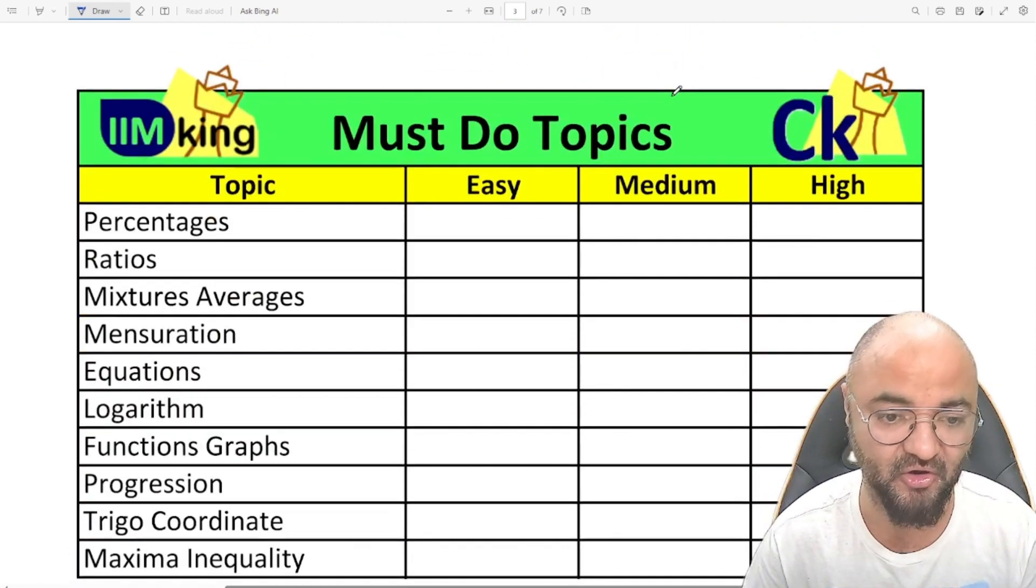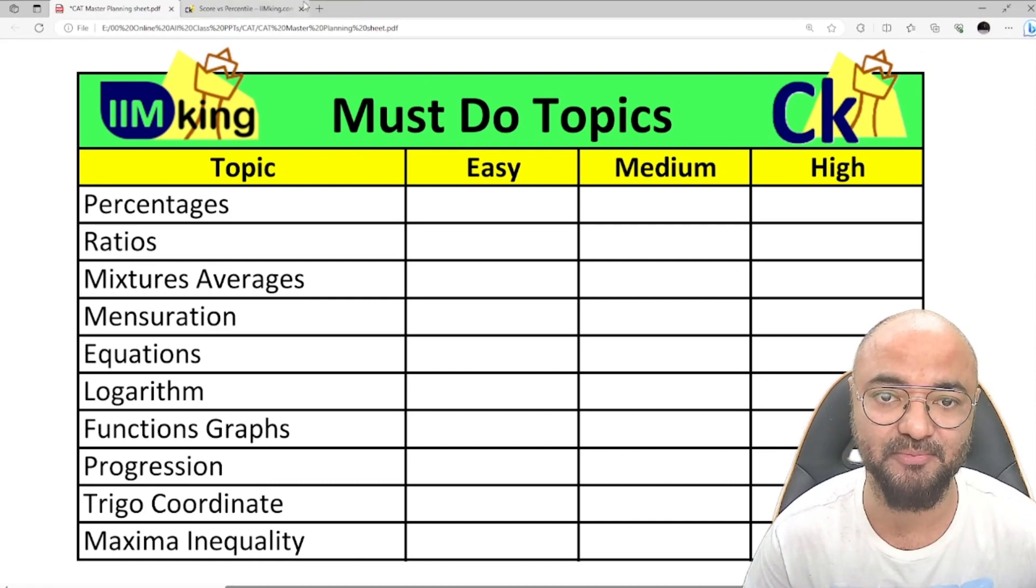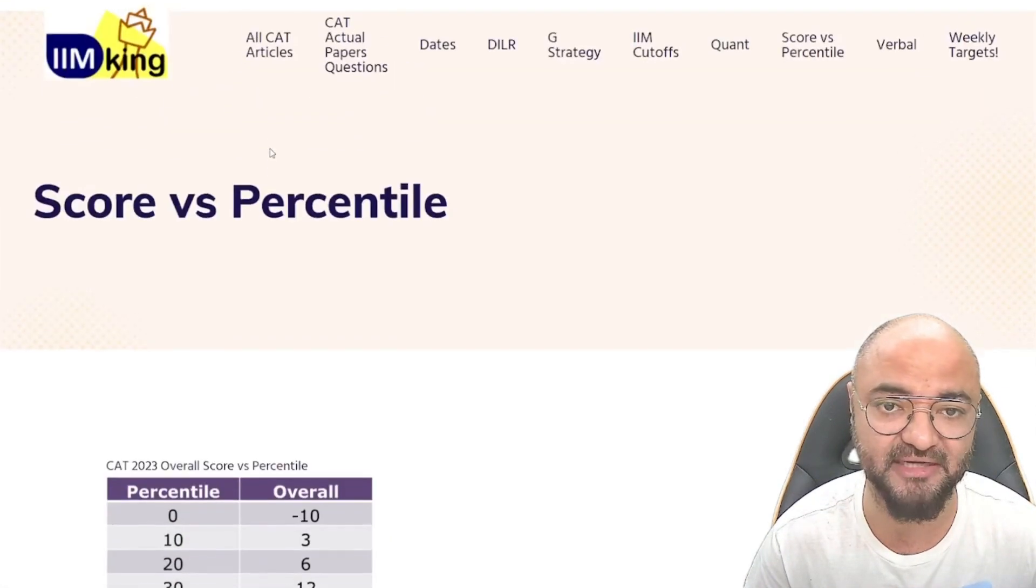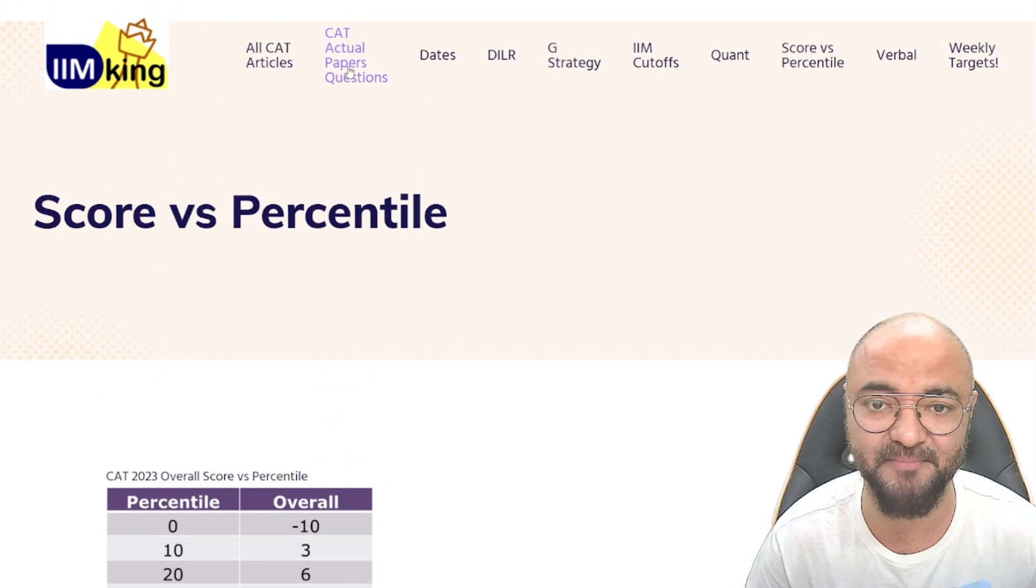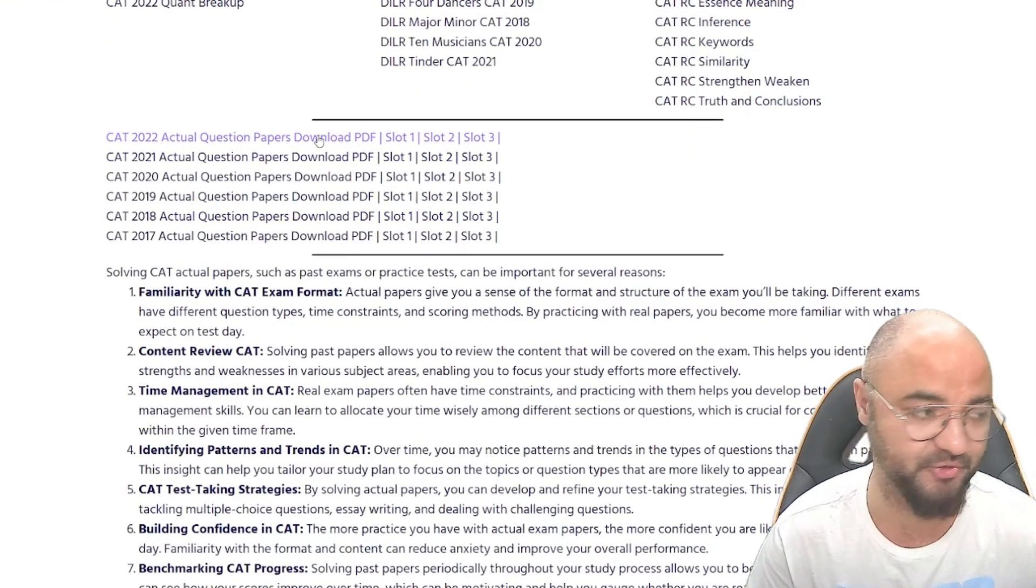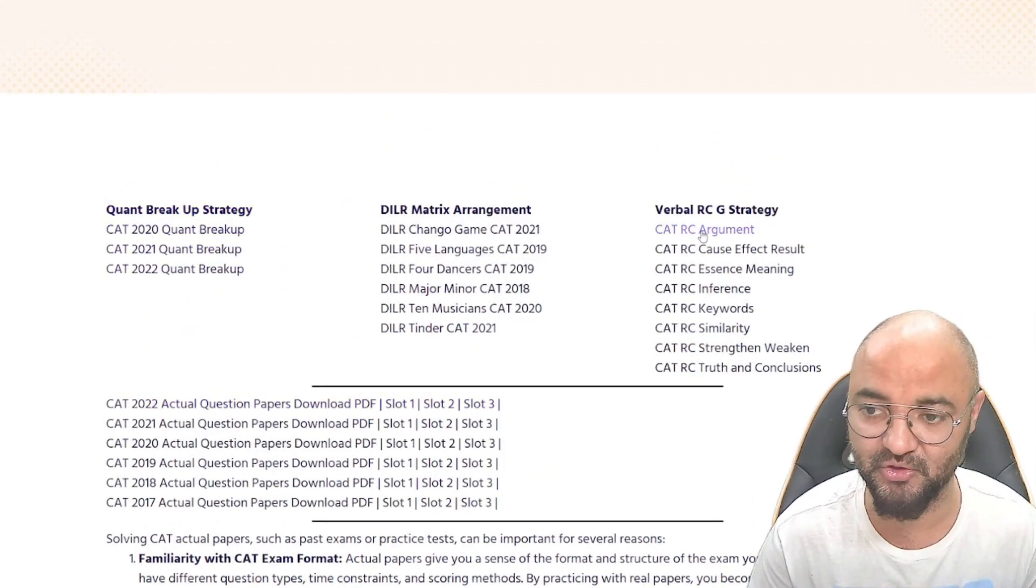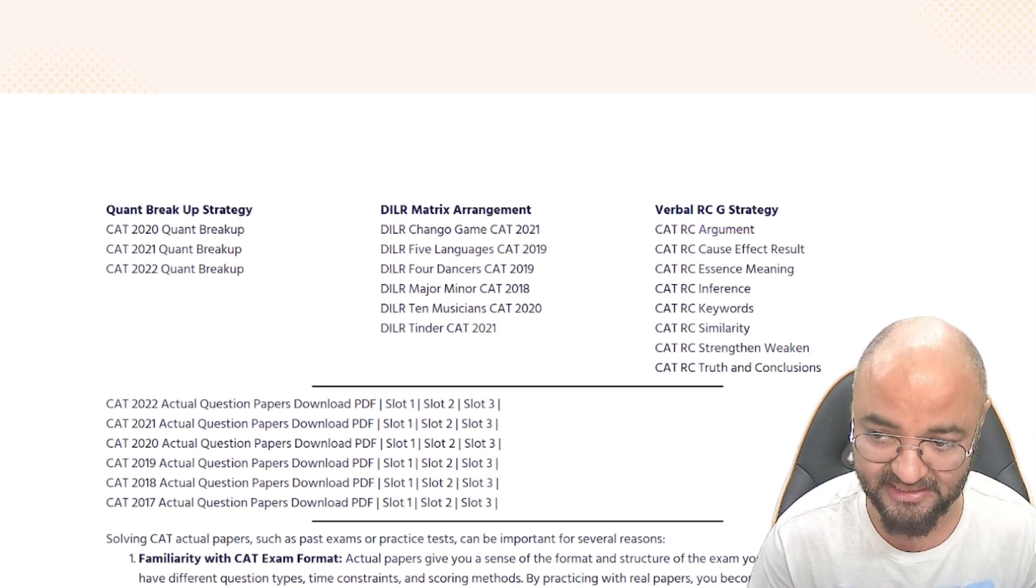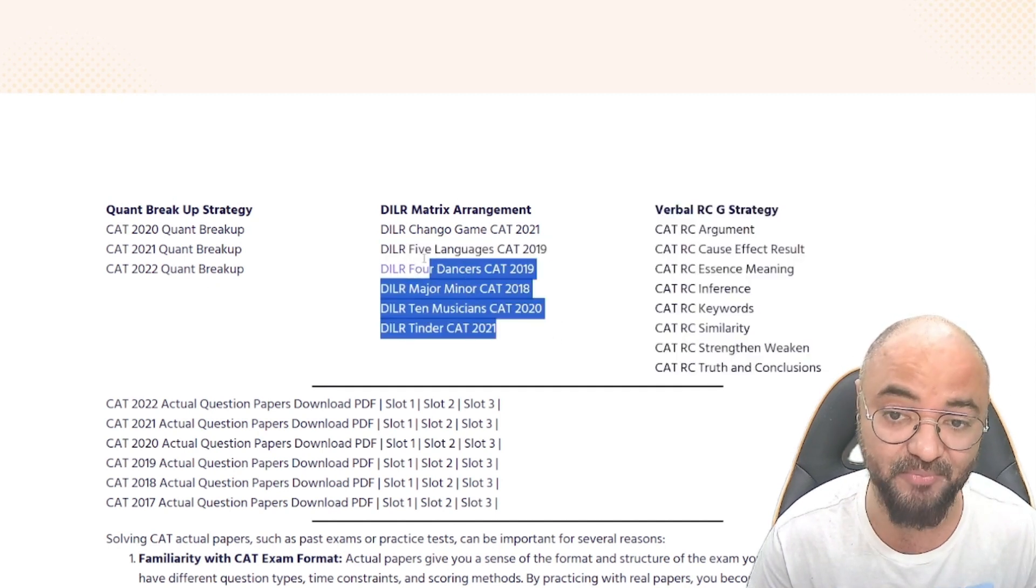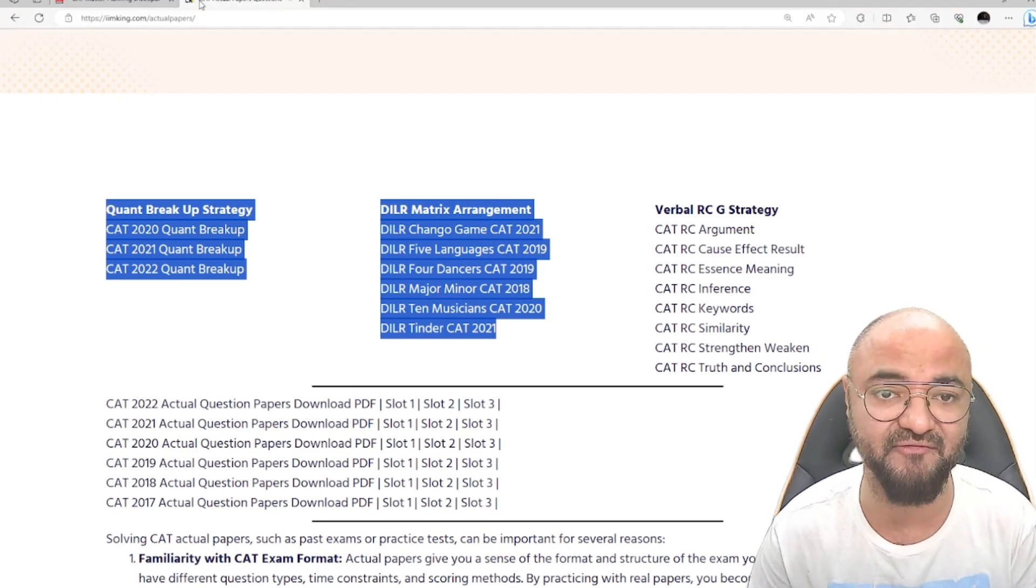So talking about the topics, these are the 10 topics if you look at the last five years CAT paper. For this, go to the site imking.com. On imking.com, you can see the actual papers. You can download the paper year-wise—2022, 21, 20—or you can download the paper topic-wise, like if you want to look at the RC type or arrangement questions. We have broken down everything topic by topic.